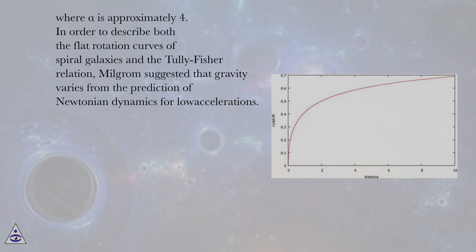In order to describe both the flat rotation curves of spiral galaxies and the Tully-Fisher relation, Milgrom suggested that gravity varies from the prediction of Newtonian dynamics for low accelerations.